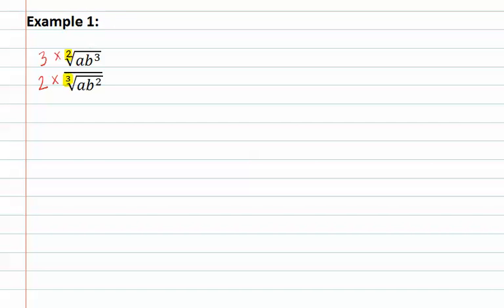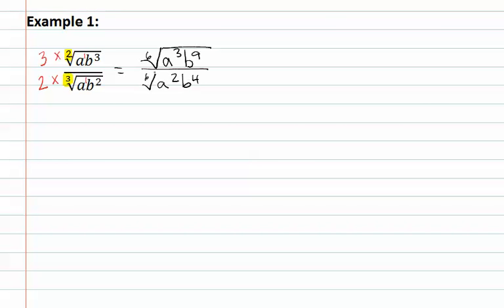Remember, any numbers or letters that are under the radical that do not have an exponent — it is implied that they have an exponent of 1. Sometimes it is helpful to write this in as a reminder. Now, when we multiply the 3 by the index and all of the exponents, we get the 6th root of a to the 3rd, b to the 9th in the numerator. In the denominator, we get the 6th root of a to the 2nd, b to the 4th.